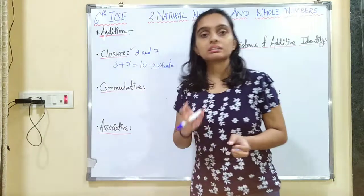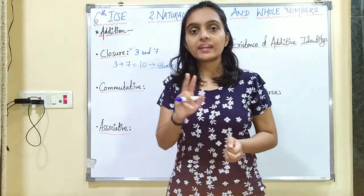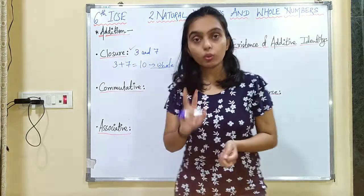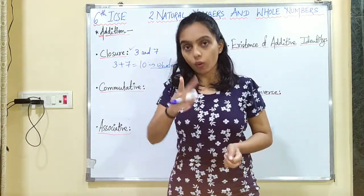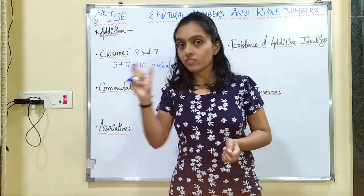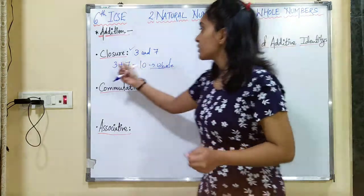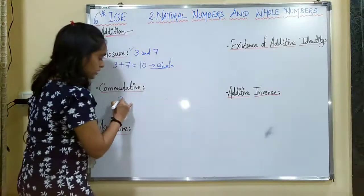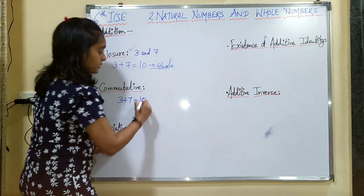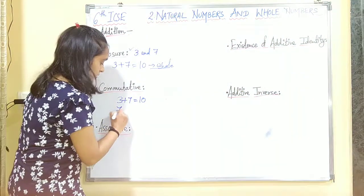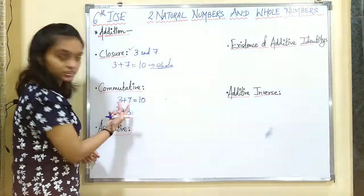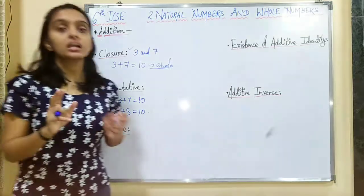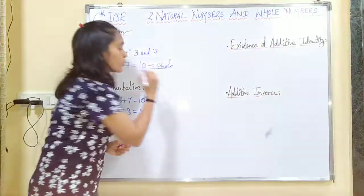The commutative property states that the order of adding two whole numbers does not change the value. So if there are two whole numbers, the order of addition gives the same result. For example, 3 plus 7 equals 10, and 7 plus 3 also equals 10. The order of addition is changed but the answer is still the same, so commutative property holds.